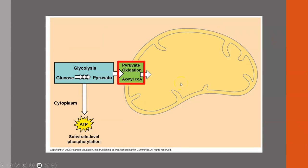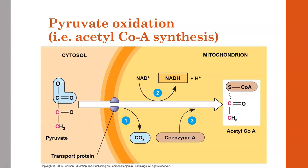Pyruvate oxidation will only happen if oxygen is present. This is why we're modeling aerobic cellular respiration—aerobic meaning with oxygen. In pyruvate oxidation, for every one pyruvate, we end up with one molecule of acetyl coenzyme A, or acetyl CoA. This is an oxidation reaction for pyruvate, so pyruvate is losing electrons. Notice who comes in to get them: NAD again. NAD is getting reduced by the electrons taken from pyruvate, and ultimately those electrons are carried by the same type of carrier, NADH.